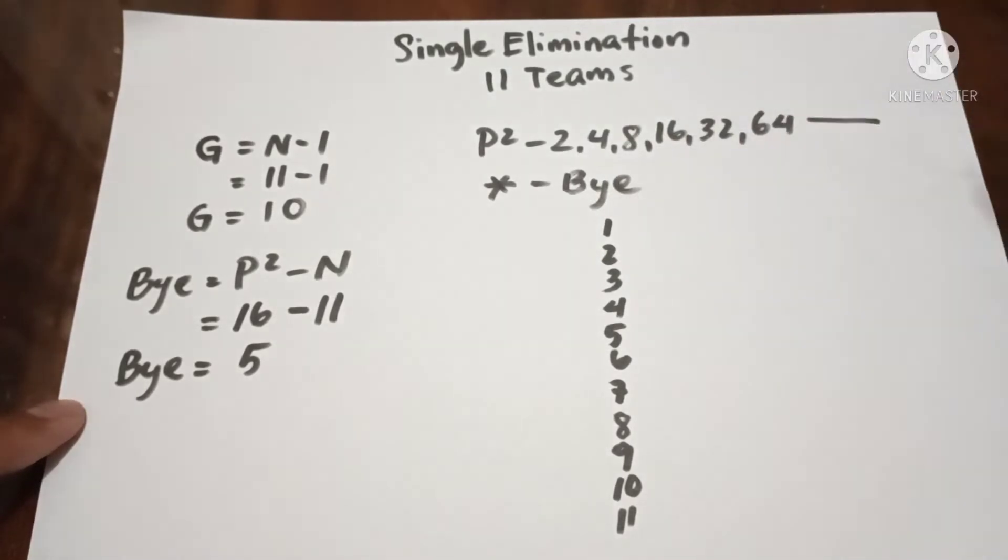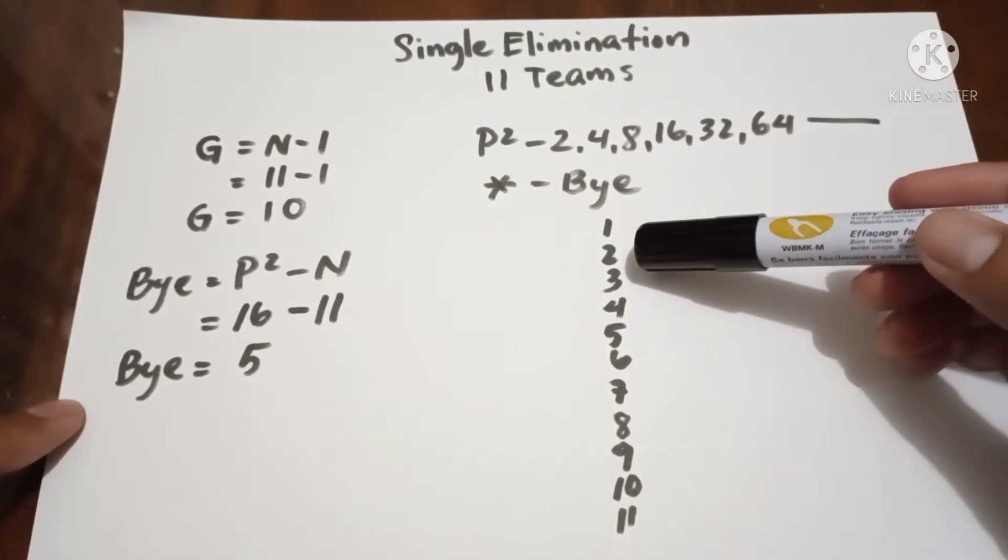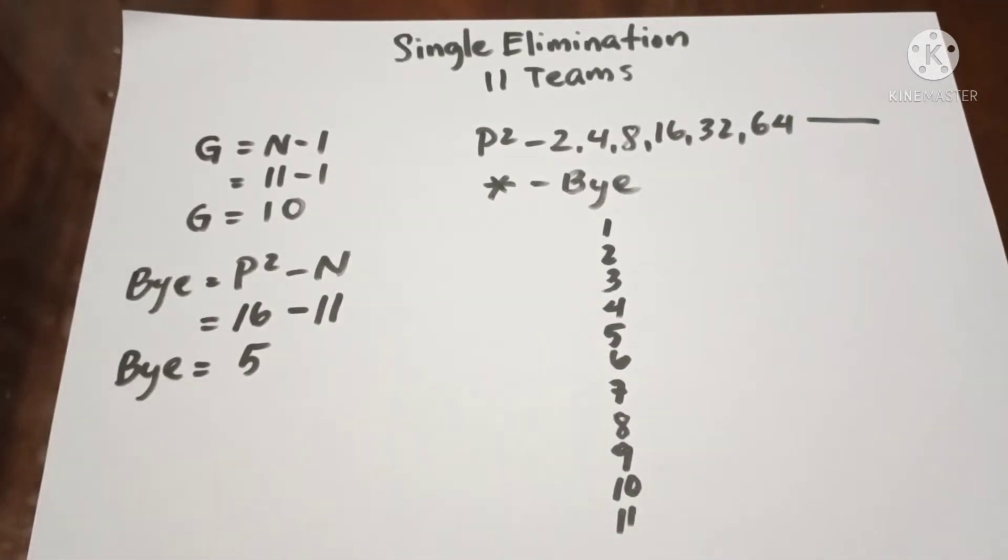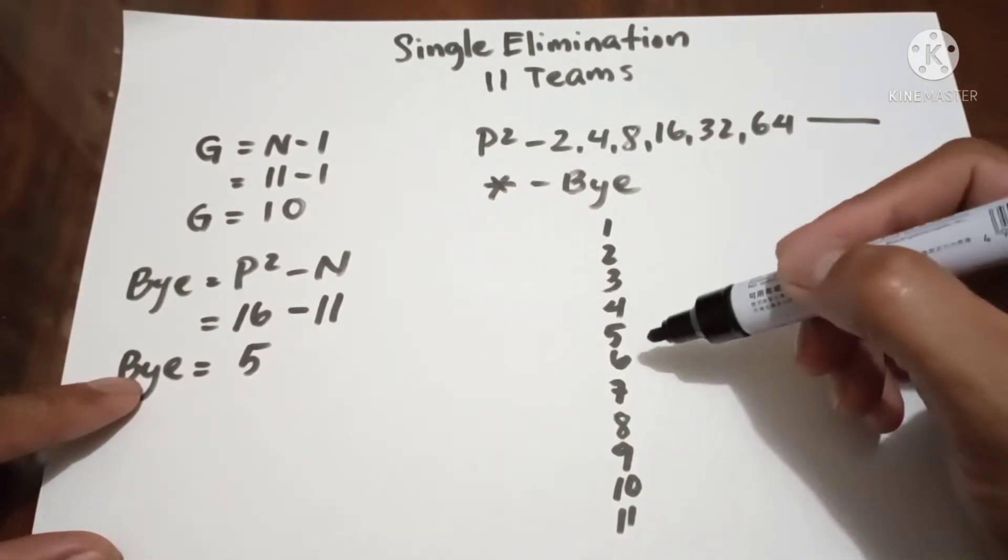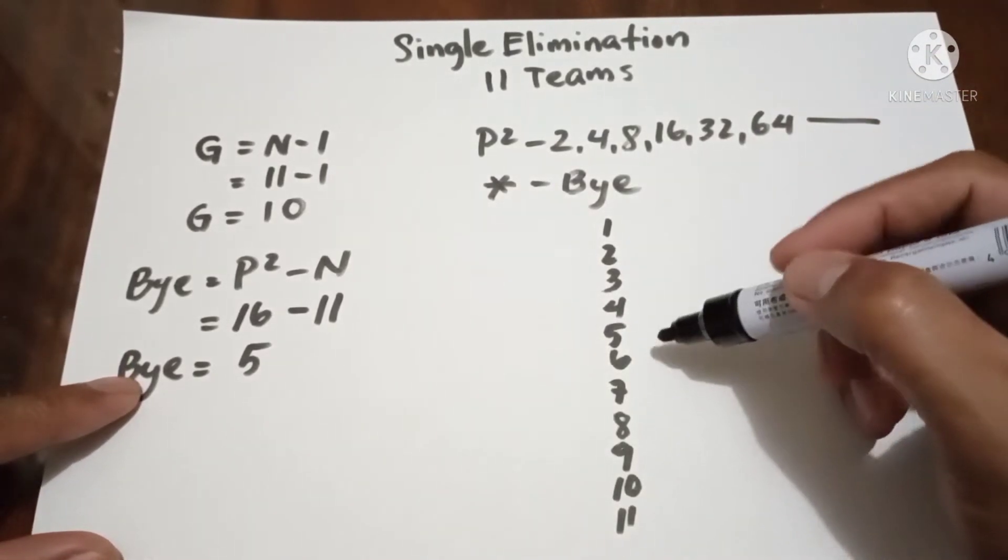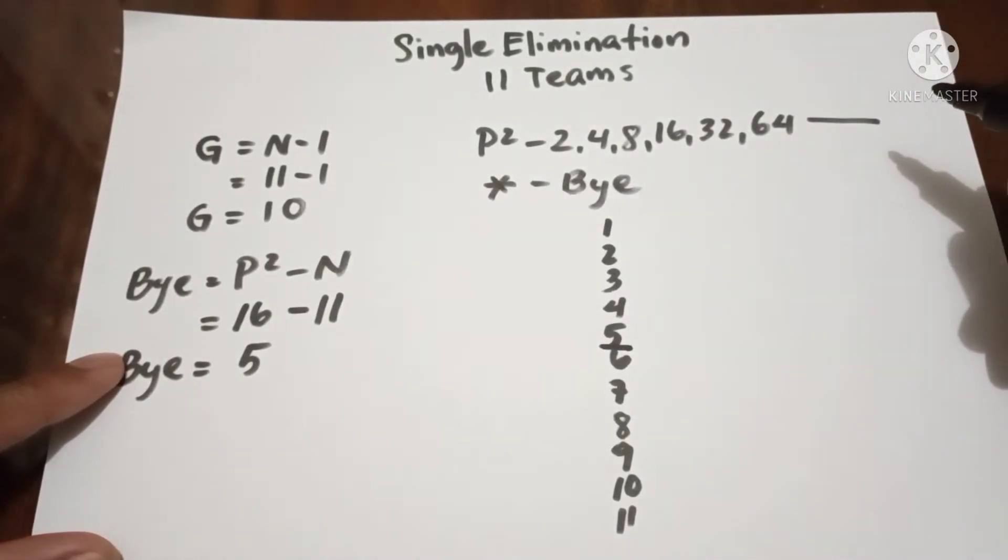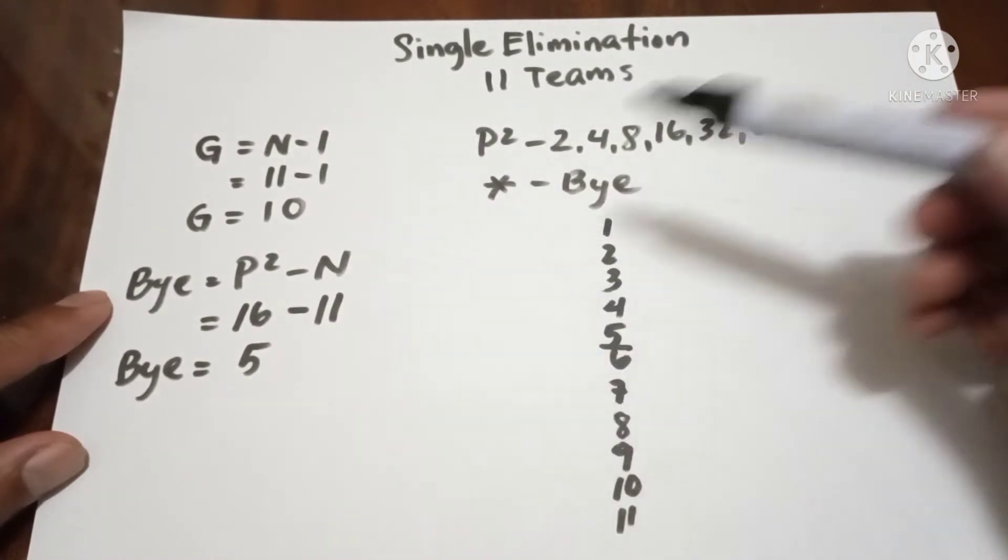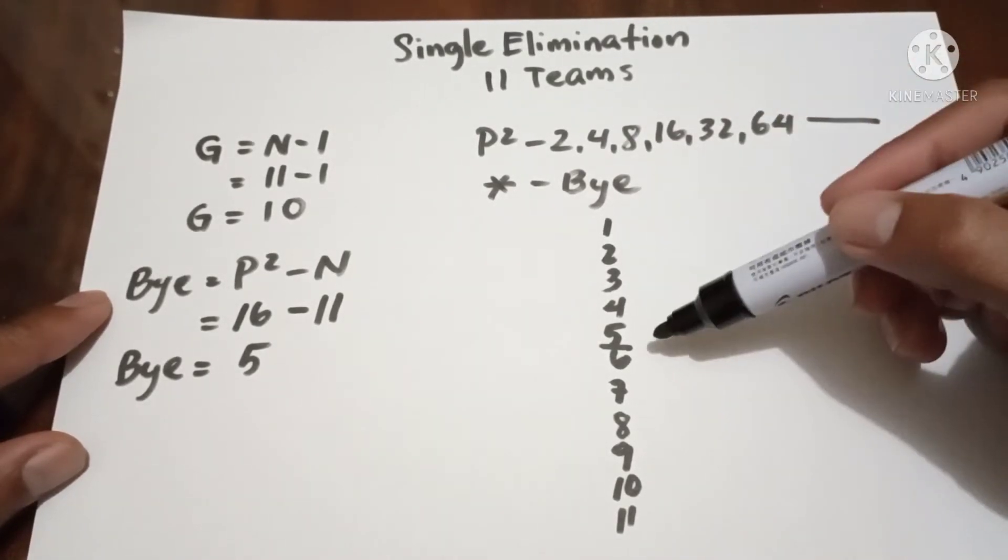Take note that we use the asterisk to identify the bye. So we need to write down the number of teams vertically downward, and we need to bracket the 11 teams into 2, between 5 and 6.